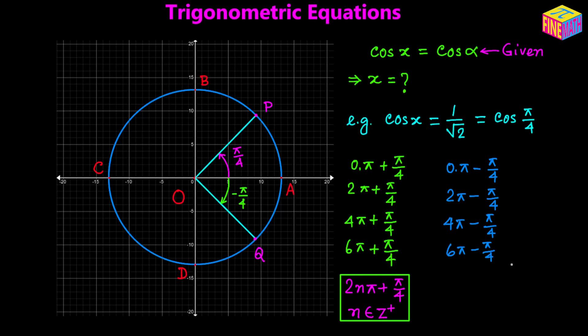So we can write it as 2n times pi minus pi over 4, where n is a non-negative integer — it could be 0 or any positive integer.